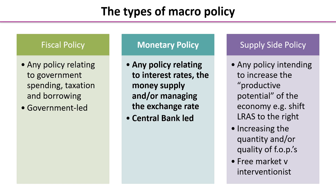Supply-side policies are policies intending to increase the productive potential of the economy — in other words, we're shifting the long-run aggregate supply curve to the right, or pushing the production possibility frontier outwards, so we're looking to create more goods and services. We can do that by either increasing the quantity or the quality of factors of production, or both. Supply-side policies can be free market, where we reduce intervention and let the free market achieve these, or they can be interventionist, whereby the government gets involved and enters the market with policies that manipulate it.